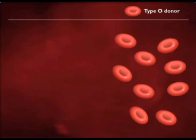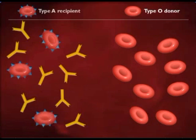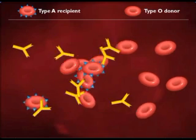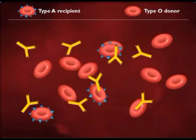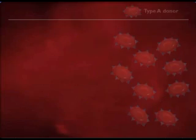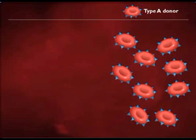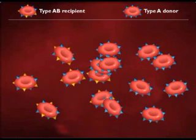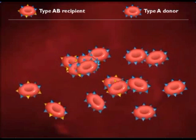Persons who are type O lack A and B antigens on the surfaces of their red blood cells, and are therefore universal donors. Persons with type AB blood lack antibodies against A or B antigens, and are therefore universal recipients.